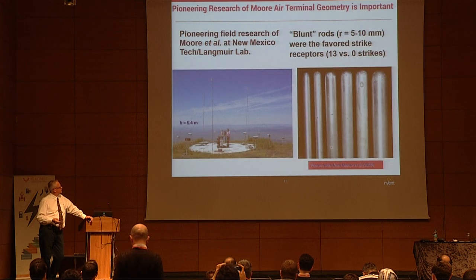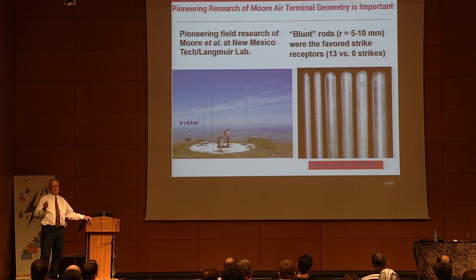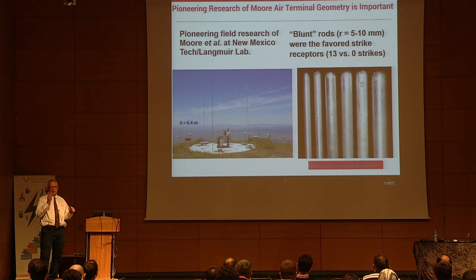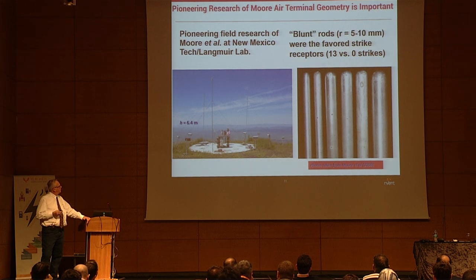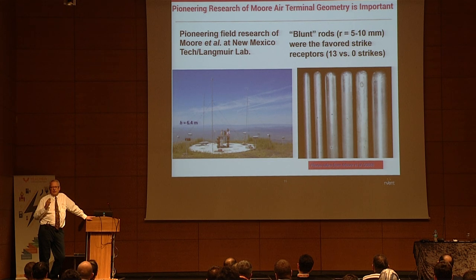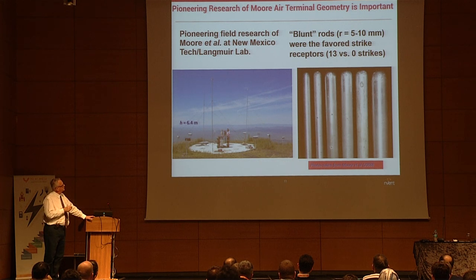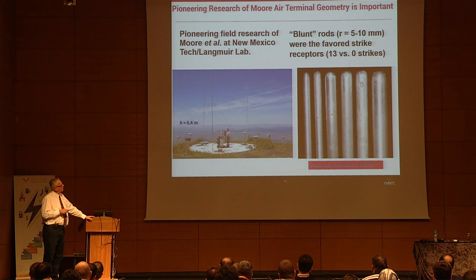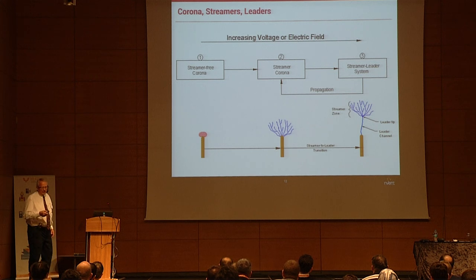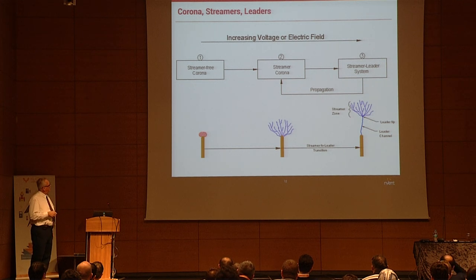What's also important is optimizing the formation of corona, which is the first step in lightning protection when the field intensifies. Dr. Moore studied this at high elevation in New Mexico, proving that a blunt radius between 5 and 10 millimeters took all the strikes, while sharp points did not. This is stream-free corona — just corona above the lightning protection terminal.